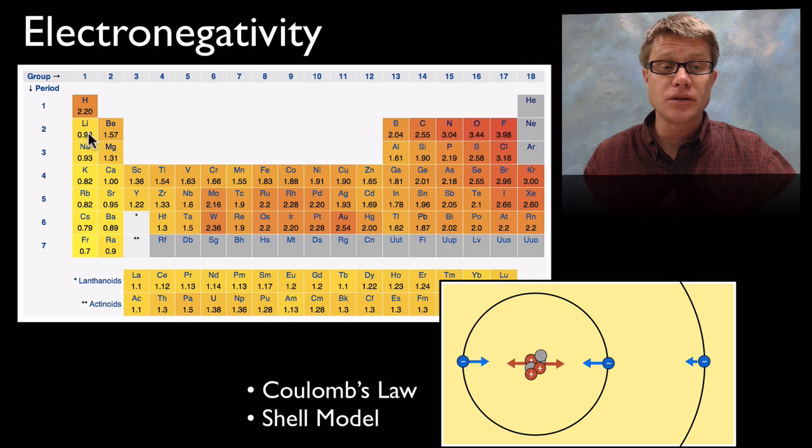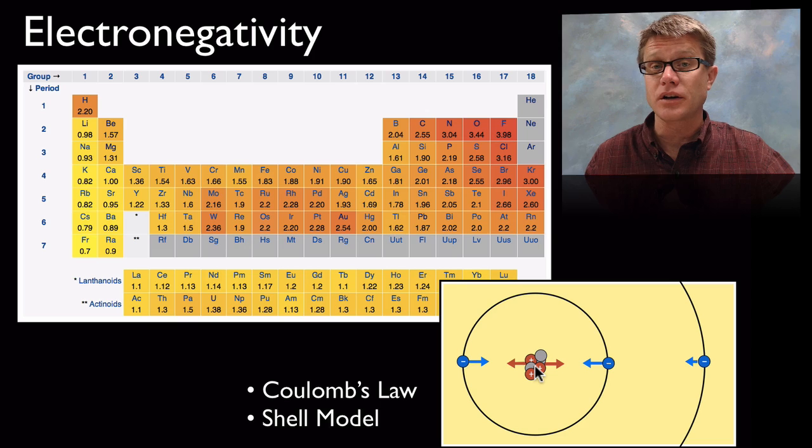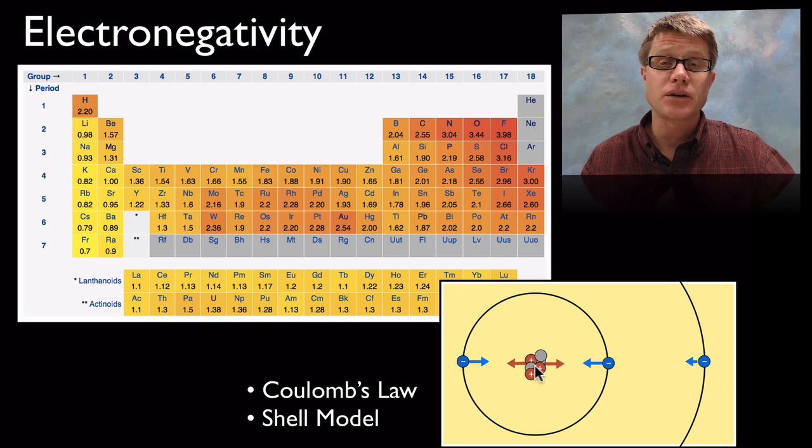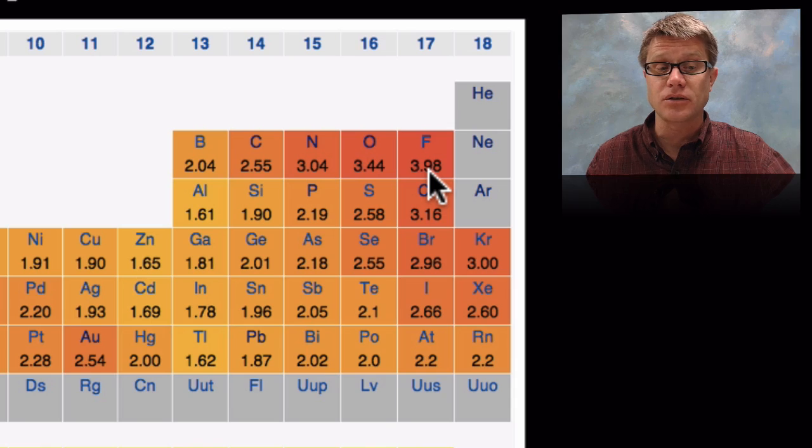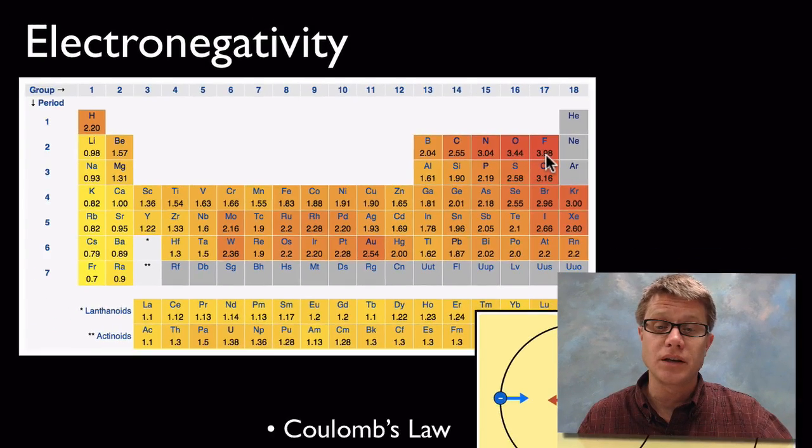As we move across you can see the electronegativity is increasing as well, because we're increasing the amount of positive charges on the inside, and so we're increasing that pull. You can see that fluorine is going to have the highest electronegativity on the periodic table. That means it wants electrons more than any other atom.